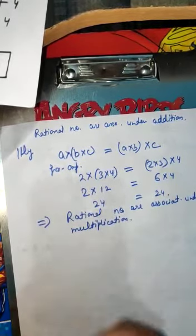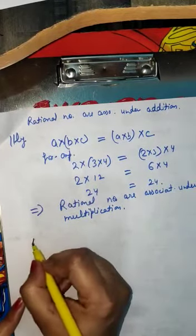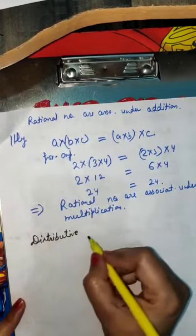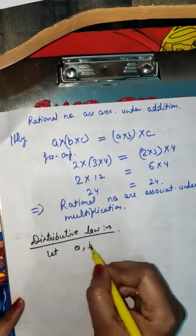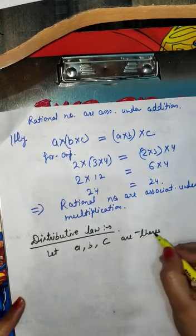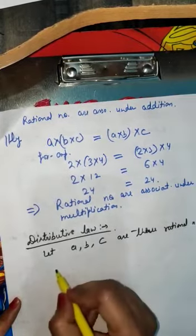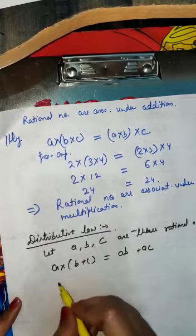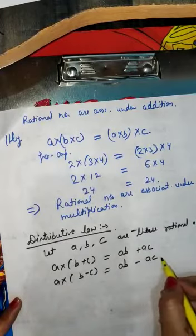Next is Distributive Law. Let A, B, and C be three rational numbers. Then A into (B plus C) is equals to AB plus AC, and A into (B minus C) is equals to AB minus AC.